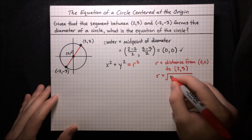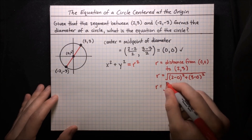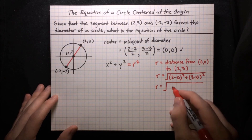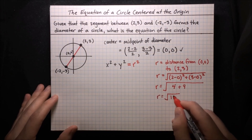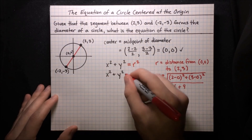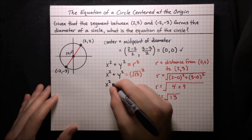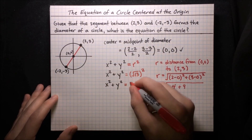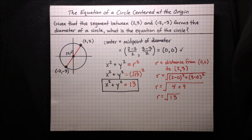We know the center is (0, 0) and two points on the circle, so let's compute the radius as the distance from (0, 0) to (2, 3). Using the distance formula: r = √((2−0)² + (3−0)²) = √(4 + 9) = √13. Substituting into our formula: x² + y² = (√13)² = 13. So the equation of the circle is x² + y² = 13. Now we know how to find the equation of a circle centered at the origin, and in the future we'll also learn how to find the equation of circles centered at any general point.